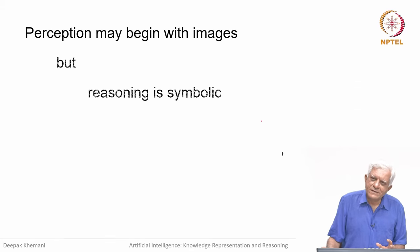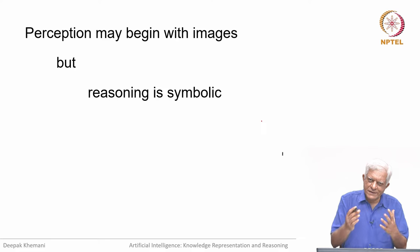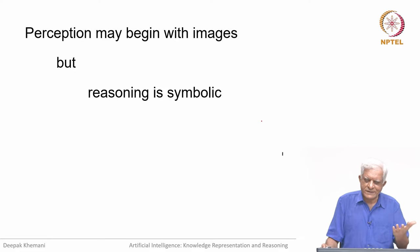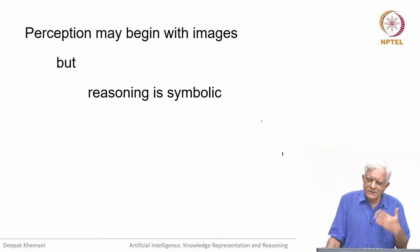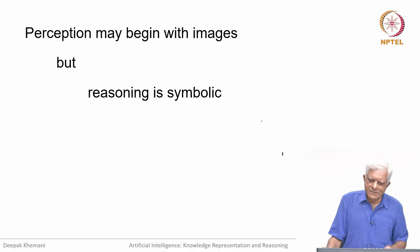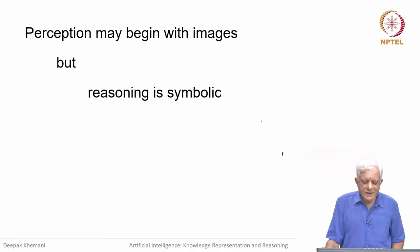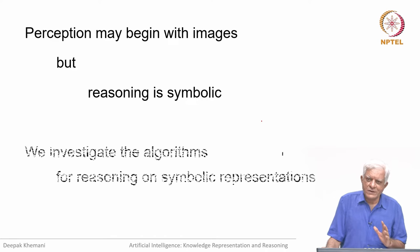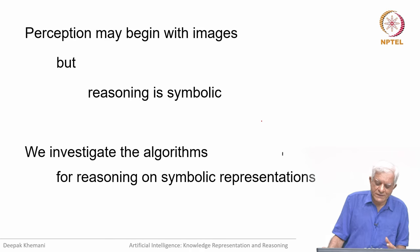Perception, the outermost layer, is a perception layer — it senses information and converts it into signals. The fuzzy system converts signals further, but reasoning itself is symbolic, and our focus is going to be on reasoning. We investigate the algorithms for reasoning on symbolic representations.